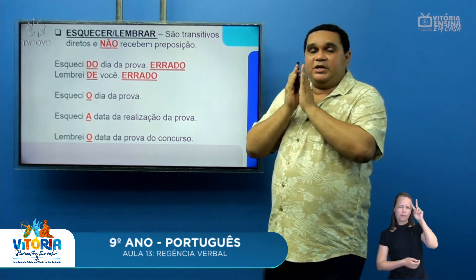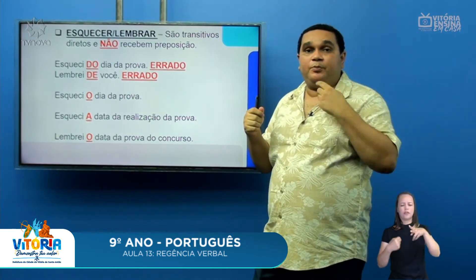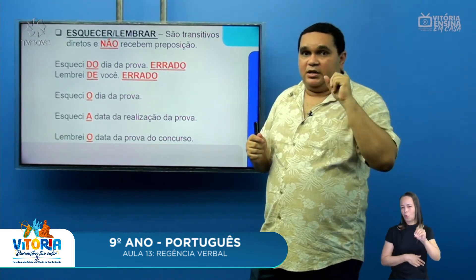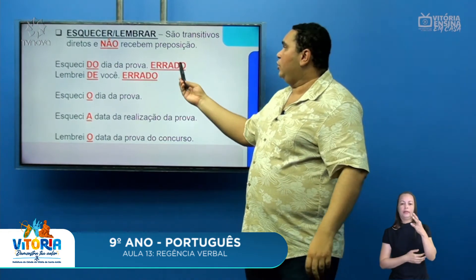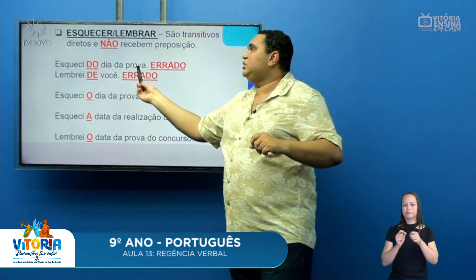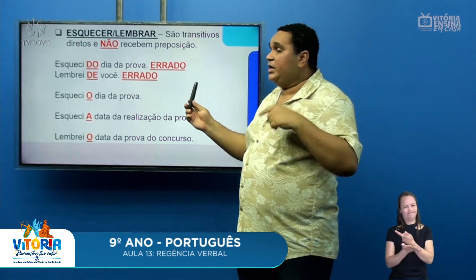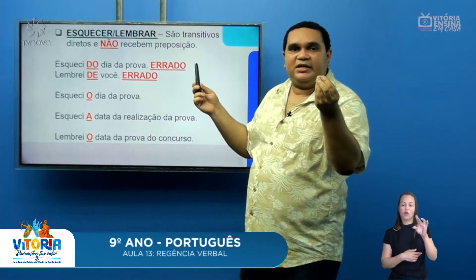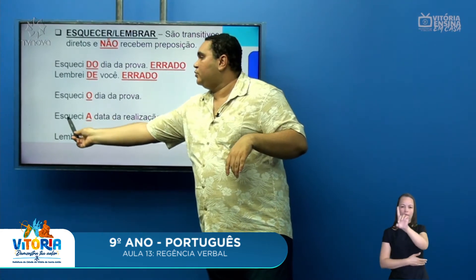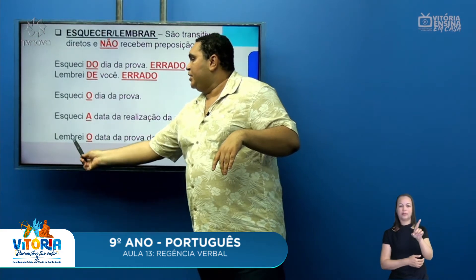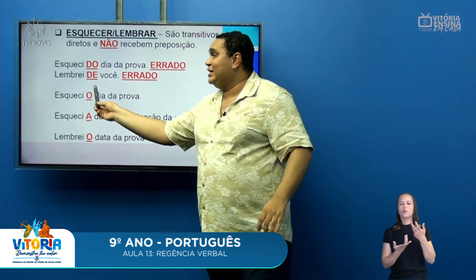Os verbos esquecer e lembrar têm algumas pegadinhas. Geralmente, quando a gente utiliza esses verbos, usa com a preposição 'de' — em alguns casos isso é incorreto. Os verbos esquecer e lembrar são transitivos diretos. Ou seja, quando dizemos 'esqueci do dia da prova' ou 'lembrei de você', está incorreto. O correto é: 'Esqueci o dia da prova', 'Esqueci a data da realização da prova', 'Lembrei o dia da prova do concurso'. Após os verbos esquecer e lembrar, não aparece preposição.